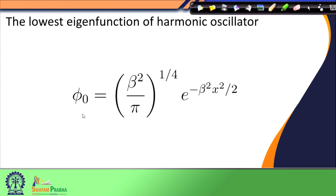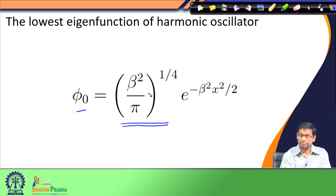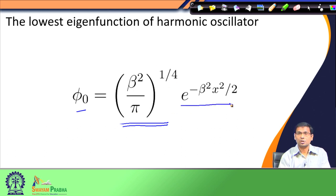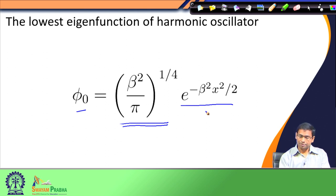We defined phi_0, the lowest eigenfunction of the harmonic oscillator. We obtained the normalization constant beta squared, which is defined as m*omega divided by h-bar. This is the normalization constant and this is the functional form of the lowest eigenfunction. This functional form is known as a Gaussian function — it gives a bell-shaped function. If you notice, the exponent of this exponential function has beta squared x squared.